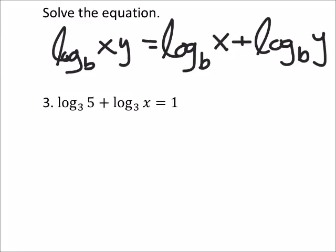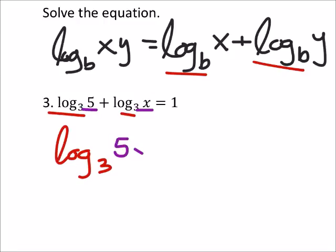So what this is saying, I guess I kind of have this backwards. You see how we have the log base and the same log base, but we're adding the two together? Since we have these two same logs with the same base, we can combine them to be log base three, but we're going to take the five and multiply it by the x to equal one.